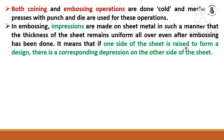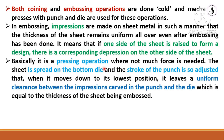One side of the sheet metal is raised to form a design, and according to that design — digits, numbers, or alphabets — there is a corresponding depression onto the other side of the sheet metal. Embossing is basically a pressing operation where not much force is required to make impressions. The sheet is placed onto the bottom die and the stroke of the punch is adjusted so that when it moves down to its lower position, it leaves a uniform clearance between the impressions carved into the punch and the die, which is equal to the thickness of the sheet being embossed.